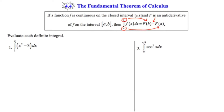The directions are to evaluate each definite integral. In number one, we're asked to evaluate the definite integral of the expression x squared minus 3 from 1 to 2. So I'm going to start by finding the antiderivative. I'm going to write down an x, and the power of 2, when taking an antiderivative, will move to a 3. And then I'm going to multiply by the reciprocal, which will be 1 third. Now I'm going to take the antiderivative of 3. When you take the antiderivative of a constant, you're just going to tack on whatever the variable is that you're using. In this case we're using x, so I'm just going to say minus 3x.